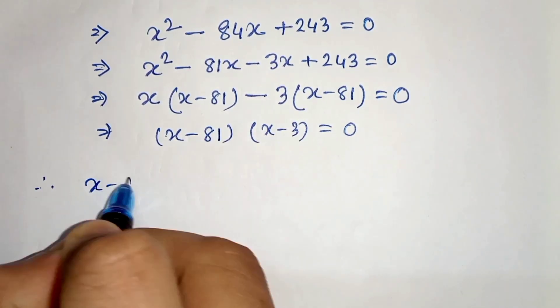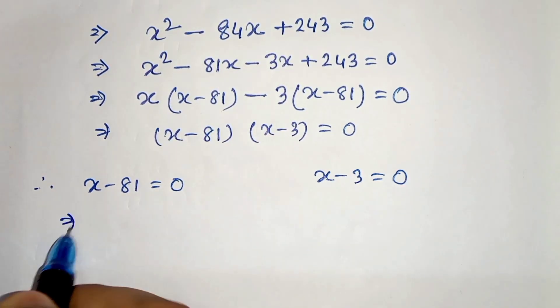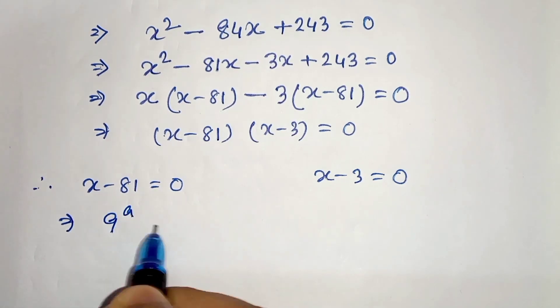Therefore we have x minus 81 equals 0 and x minus 3 equals 0. Now let us replace the value of x, which is 9 to the power a equals 81, and 81 is 9 squared.